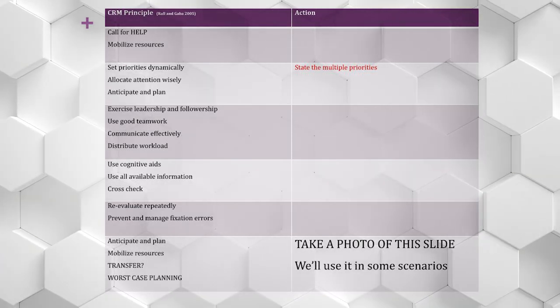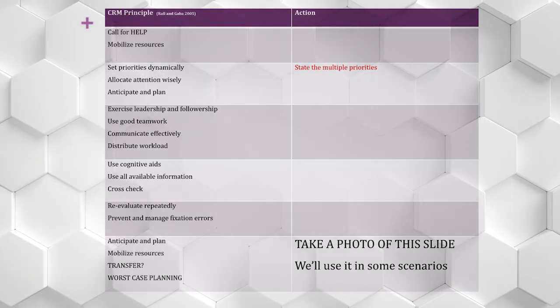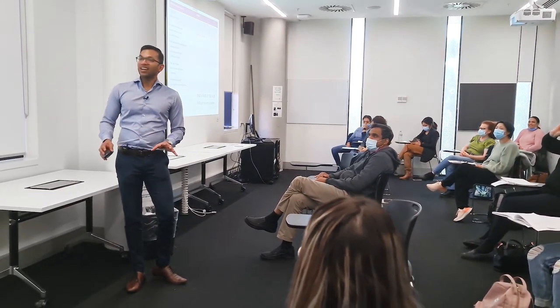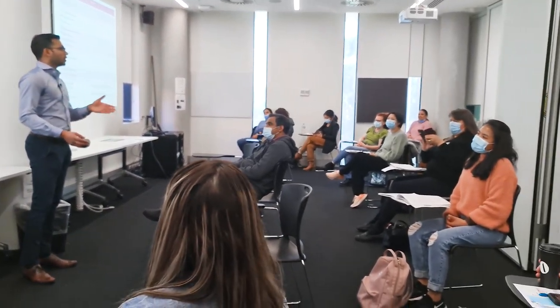Take a photo of this slide, because we're going to apply these principles to scenarios. What does it mean to call for help in your environment? Press the emergency buzzer — that's the wall buzzer so people in the immediate area come to help. You can also call triple four at this hospital, or triple zero at home. Always call for help early — that's probably the most basic but important thing.